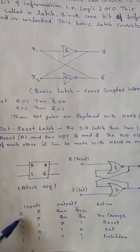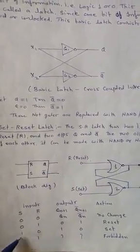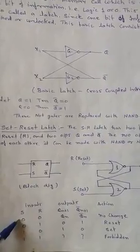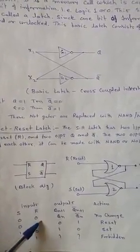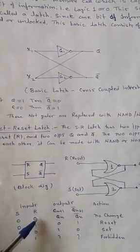The value of inputs is 00, 01, 10, and 11. First we take input as 00, S is 0 and R is 0.